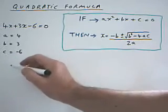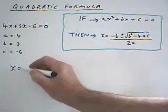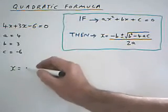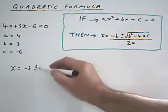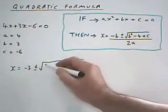Now put them into the formula. X equals minus b. Well b is 3. So minus 3 plus or minus the square root of b squared, well it's 3 squared.